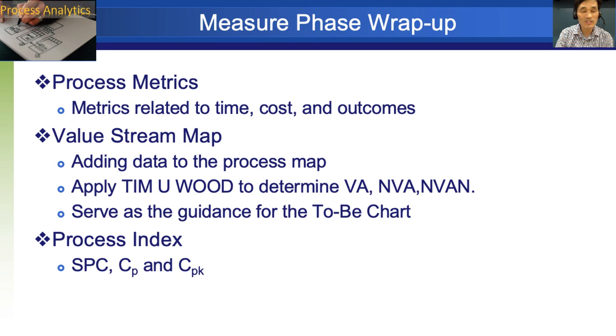Okay, so let's wrap up the measure phase. Process metrics and value stream map and process index were covered in this phase. Process metrics. We saw time-based, cost-based, and outcome-based measures. Especially, takt time and cycle times were very important. In value stream map, we need to add value to the process map and apply TIM U WOOD to determine whether it is a value adding activities or non-value adding activities or non-value adding activities but necessary. Also, it serves as the guidance for the to be chart. The third topic was process index and there we learned statistical process control chart and CP and CPK.